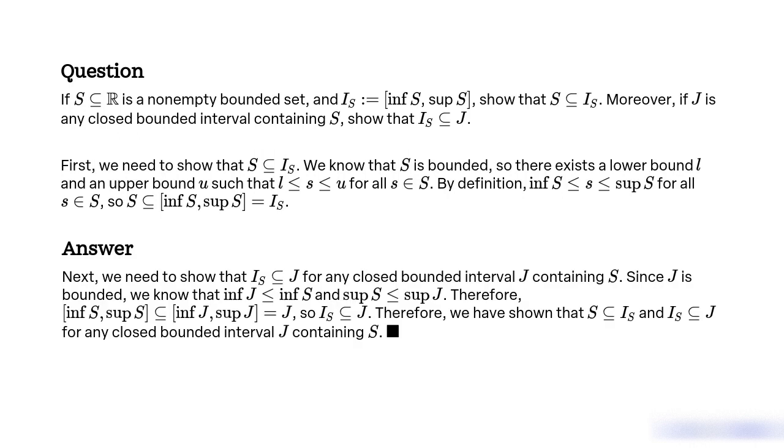Next, we need to show that IS ⊆ J for any closed bounded interval J containing S. Since J is bounded, we know that inf J ≤ inf S and sup S ≤ sup J. Therefore, [inf S, sup S] ⊆ [inf J, sup J] = J, so IS ⊆ J.